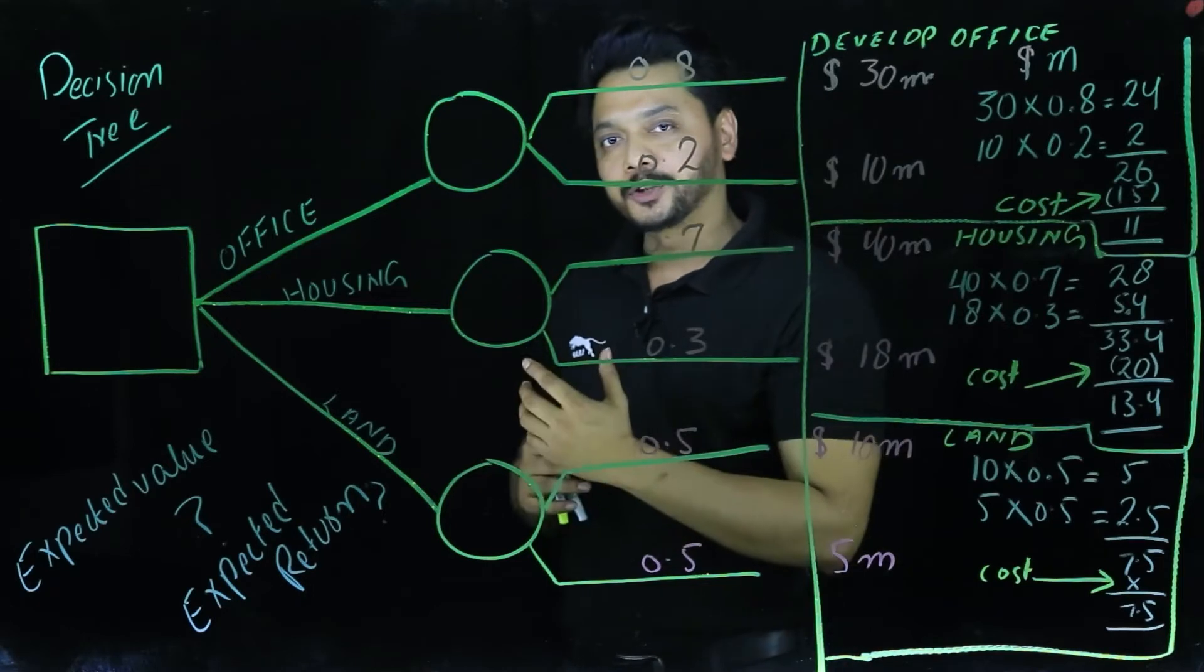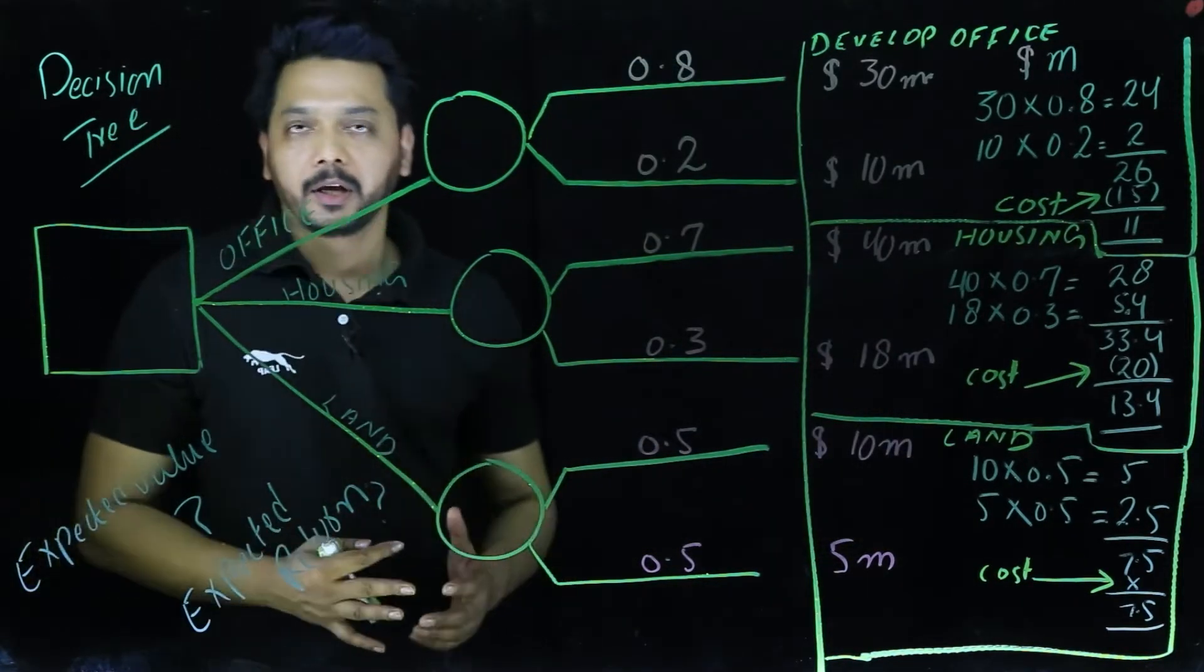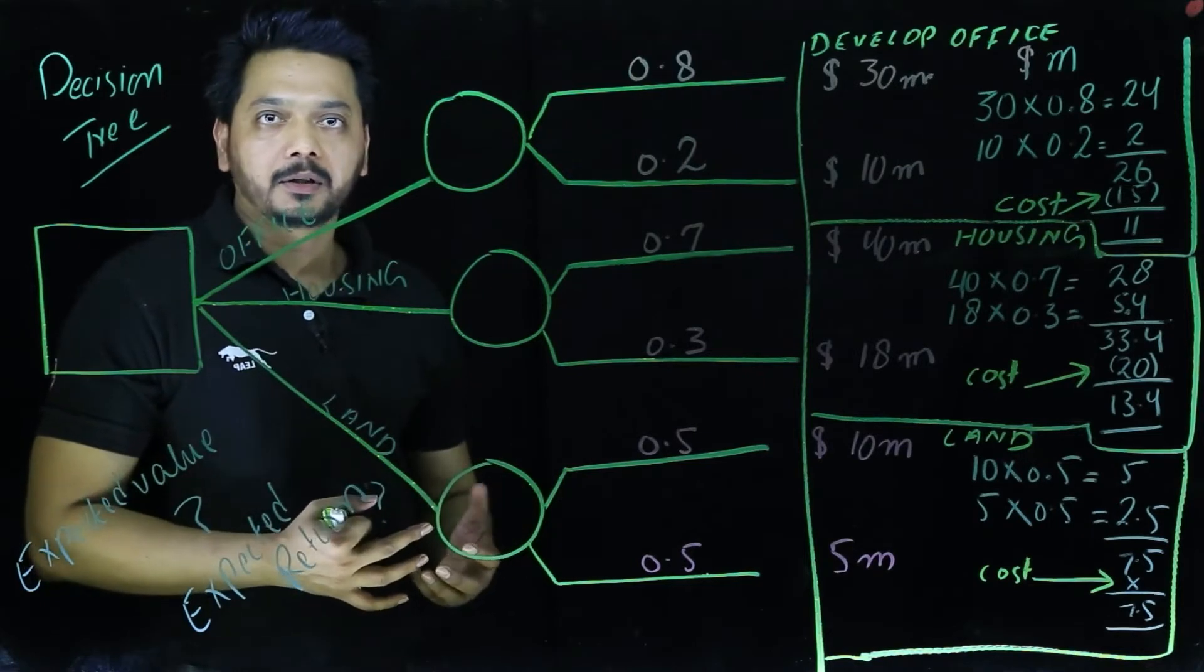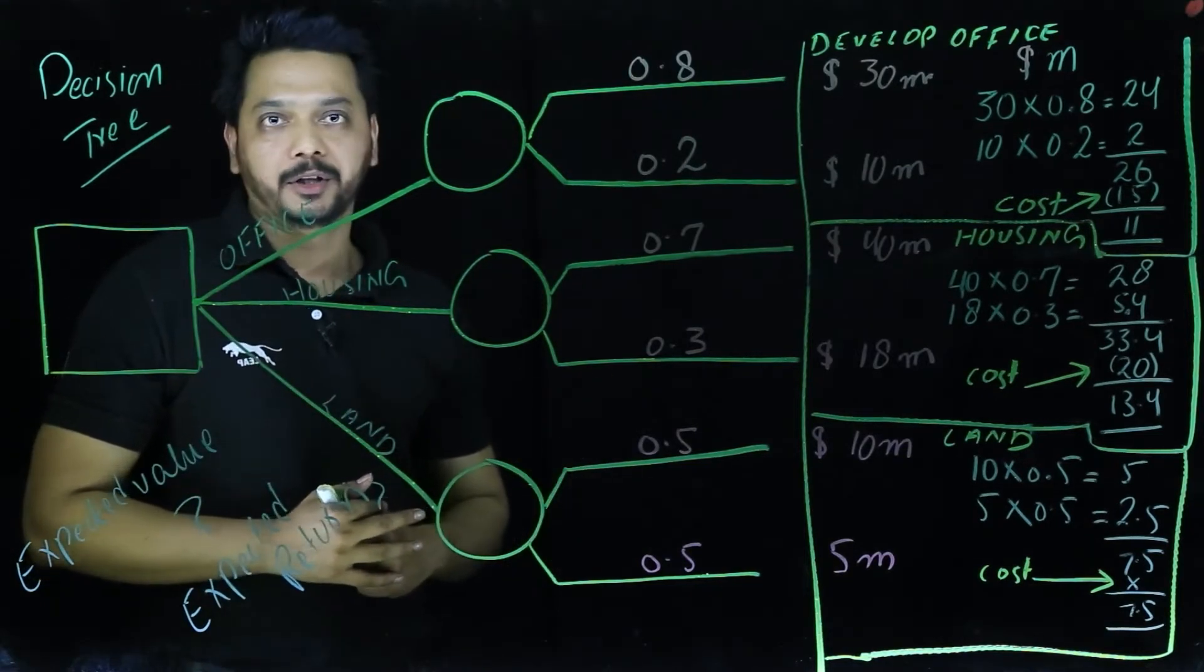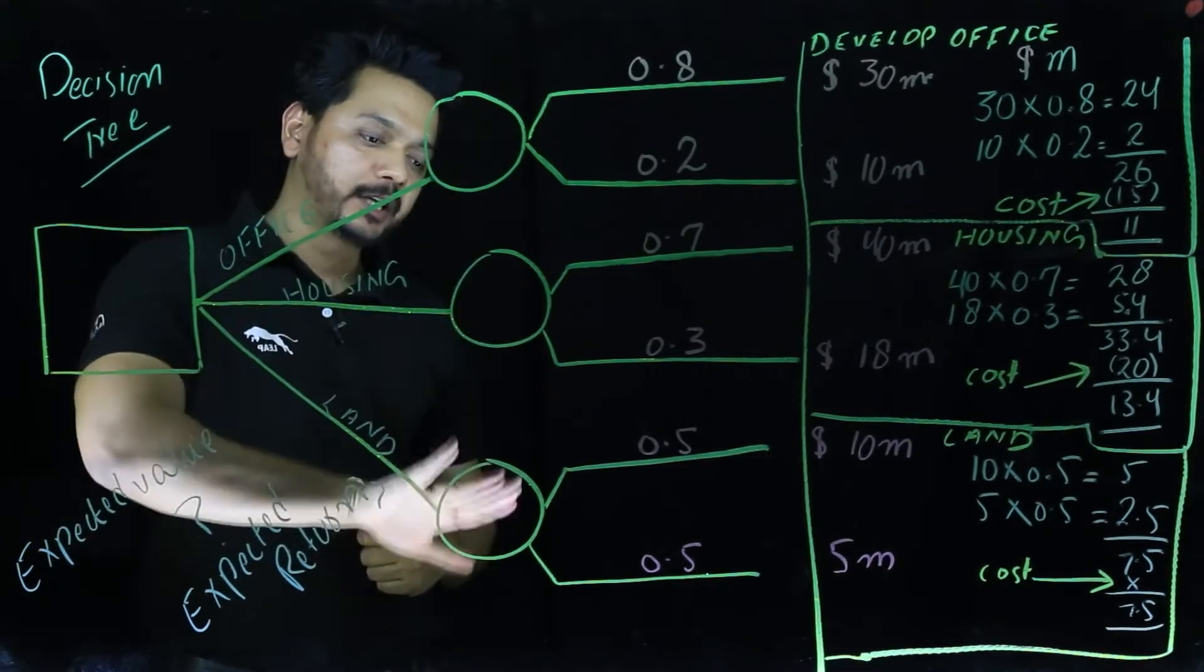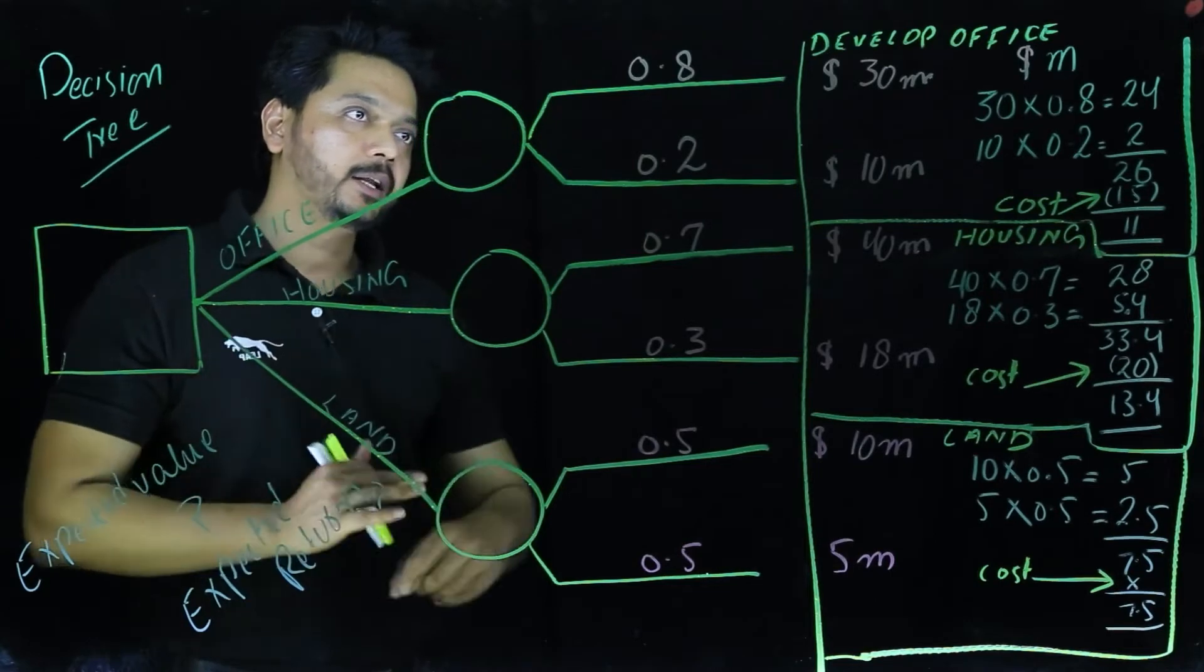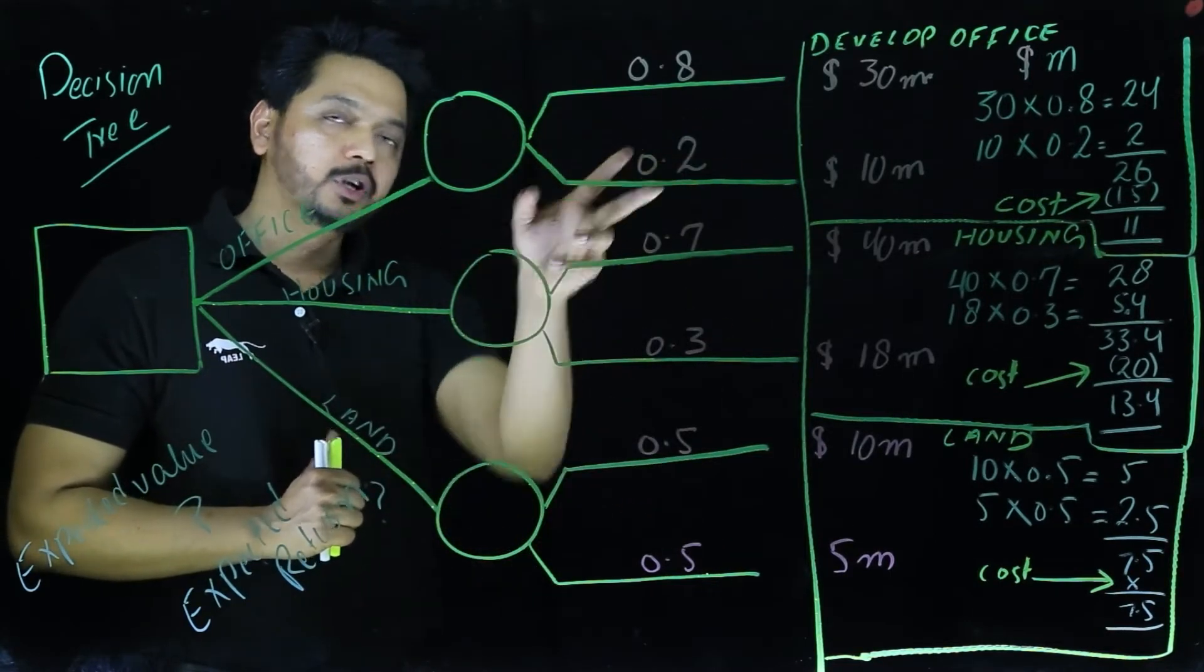So let's start the situation. If we start discussing the decision tree analysis, we need to understand the diagram here. You see, here we got a final decision node, these are the chance nodes, and then there are some outcomes. See, the branches have got the outcomes.